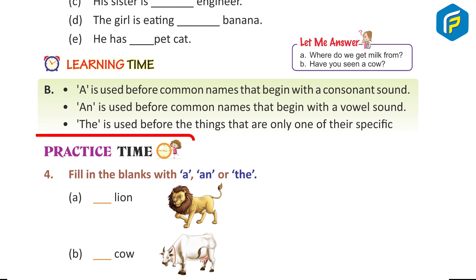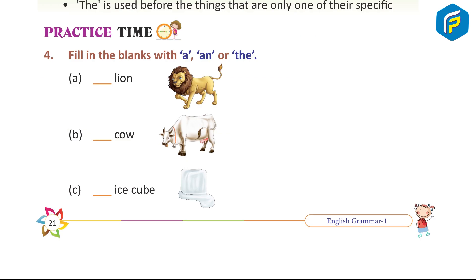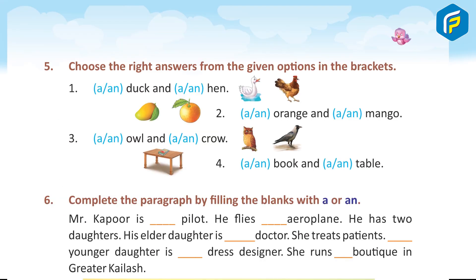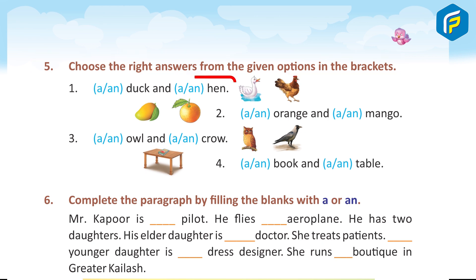Practice Time 4: Fill in the blanks with 'a', 'an', or 'the'. A) a lion. B) a cow. C) an ice cube. Five: Choose the right answer from the given options in the brackets. 1) a duck and a hen.